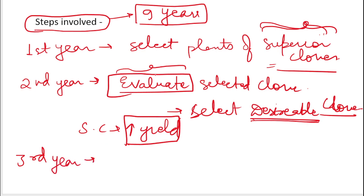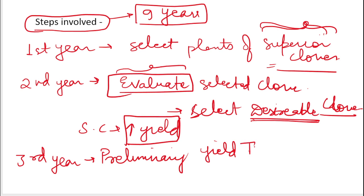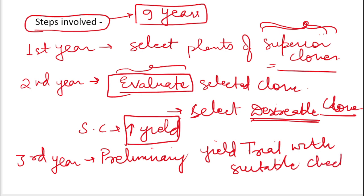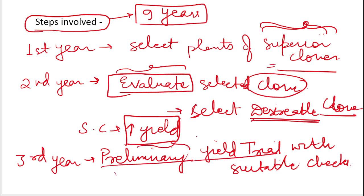In the third year, we do a preliminary trial with a suitable check. Whatever clones we have selected, we conduct a preliminary — meaning a starting — trial. We compare their characters against a suitable check variety.